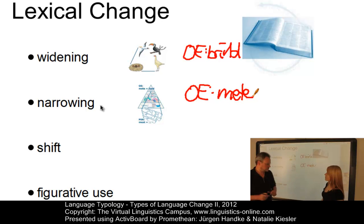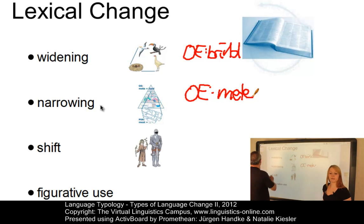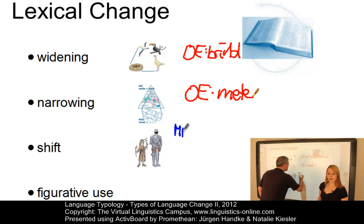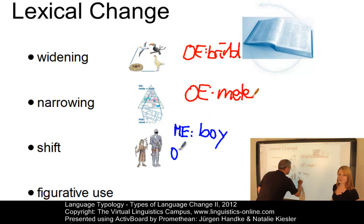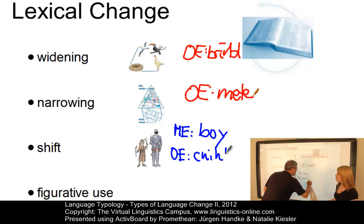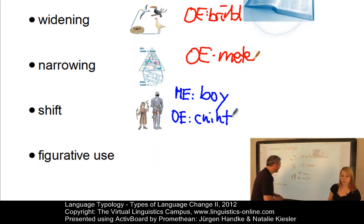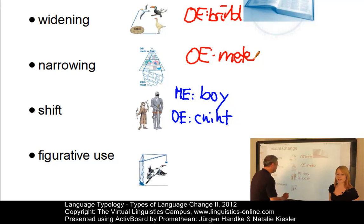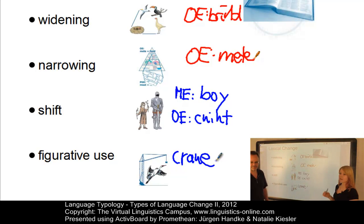Another change is the shift, which means that one lexeme completely loses its original meaning and acquires a new one. An example is the Middle English word 'boy': the Old English form 'knicht' shifted its earlier meaning of boy or male youth to the more narrow meaning of youthful gentleman soldier. Our last example is figurative use, which means the meaning of a lexeme is based on analogy or likeness between things. An example is the word 'crane,' which has both its biological sense and also denotes a certain vehicle.